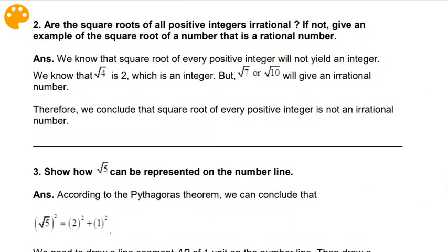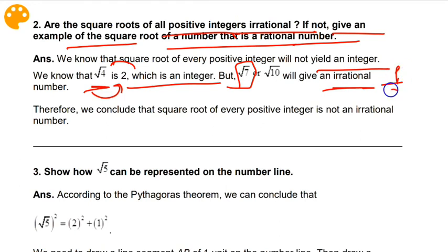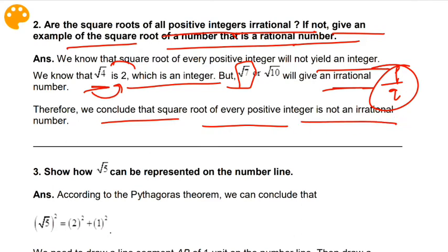Question number two: are the square roots of all positive integers irrational? If not, give an example of a square root of a number that is a rational number. We know that the square root of every positive integer will not yield an integer. For example, √4 equals 2, which is an integer. But √7 cannot be solved to an integer — the answer comes in decimal form, so it is irrational and cannot be written in the form p/q. Therefore we conclude that the square root of every positive integer is not an irrational number.